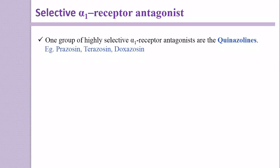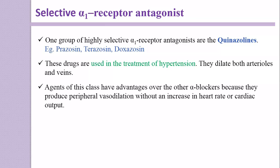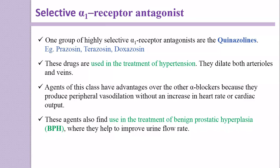One group of highly selective alpha-1 receptor antagonists are the Quinazolines — examples like Prazosin, Terazosin, and Doxazosin. These drugs are used in the treatment of hypertension because they dilate both arterioles and veins. Agents of this class have advantages over other alpha blockers because they produce peripheral vasodilation without an increase in heart rate or cardiac output.